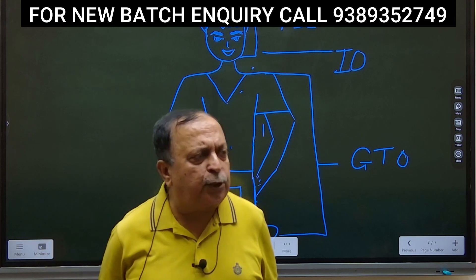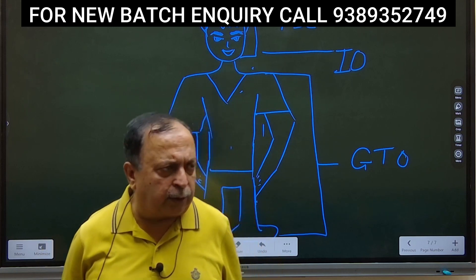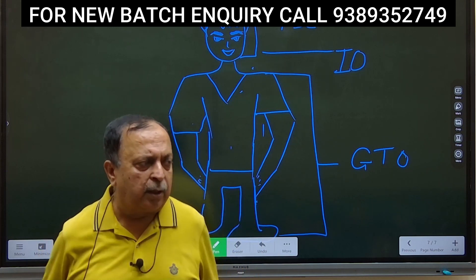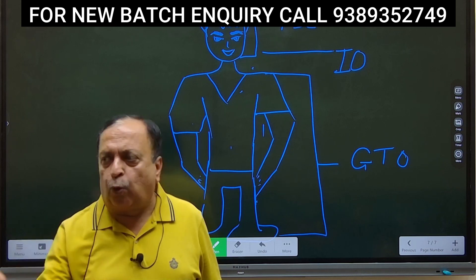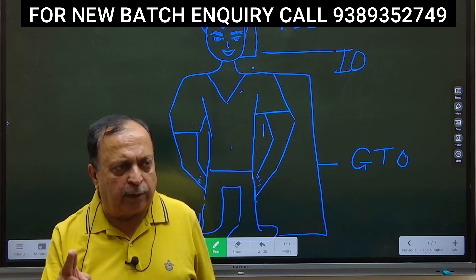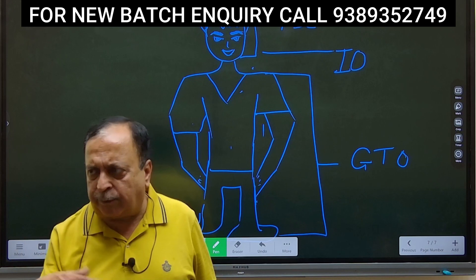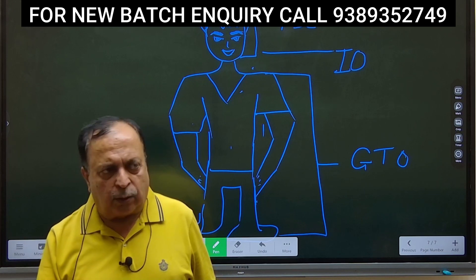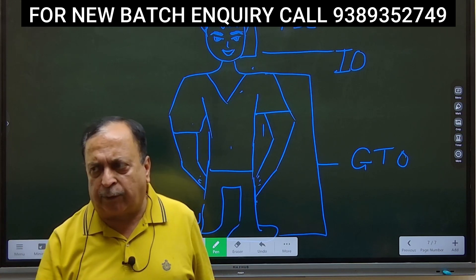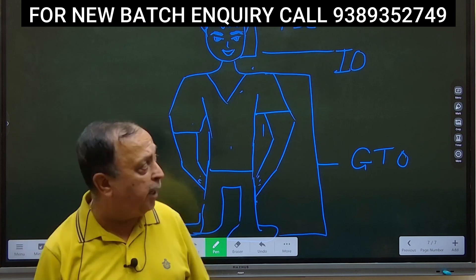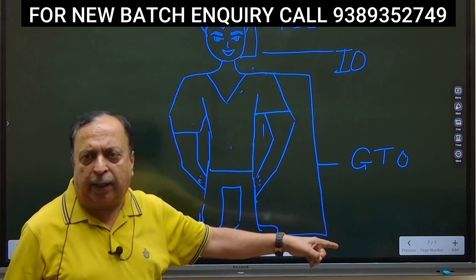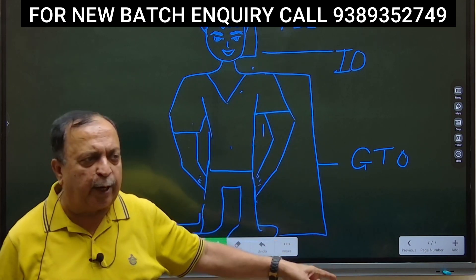After you have been screened in or screened out depending on the first test, you go to Phase 2. There are two types of selections in SSB: Phase 1 and Phase 2. A candidate who has to get recommended must clear Phase 1 first, and then goes into Phase 2 where the Psychologist, IO, and GTO will be testing them.